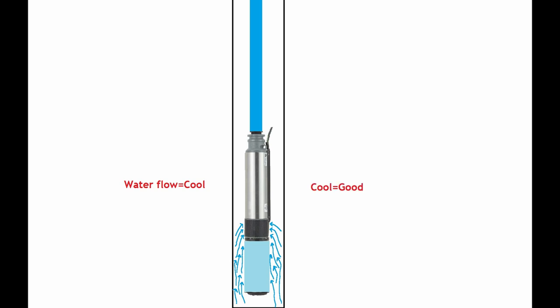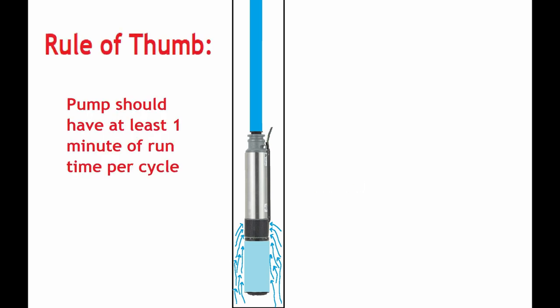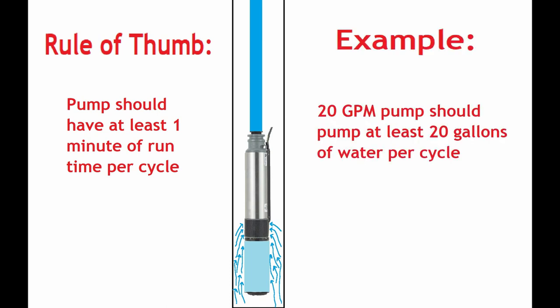The rule of thumb is you want the pump to run for at least one minute per cycle. Meaning if you have a 20 gallon per minute pump, you want the pump to pump at least 20 gallons of water per cycle.